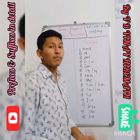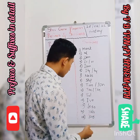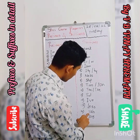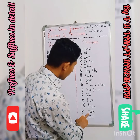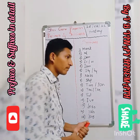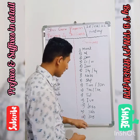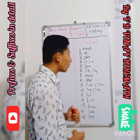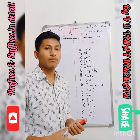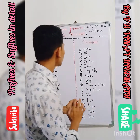The suffix '-less': helpless, hopeless, powerless, friendless. The suffix '-ish' (I-S-H): boyish, kiddish, childish. The suffix '-ious' or '-ous' (O-U-S): precious, previous — like that.